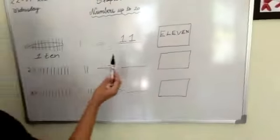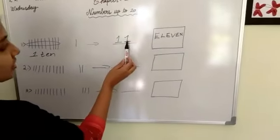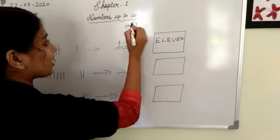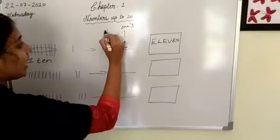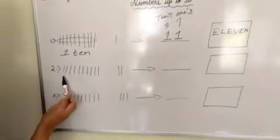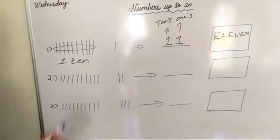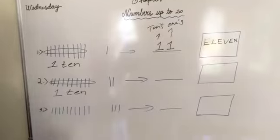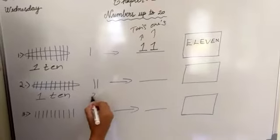So look, we will get the number 11. From the right, the first number is 1 and 1 is in the ones place. Then from the right, the second number is 1, and that 1 is in the tens place. Then move to the next example. Count 1, 2, 3, 4, 5, 6, 7, 8, 9, and 10, and we make it as a bunch and we will get 1 ten.